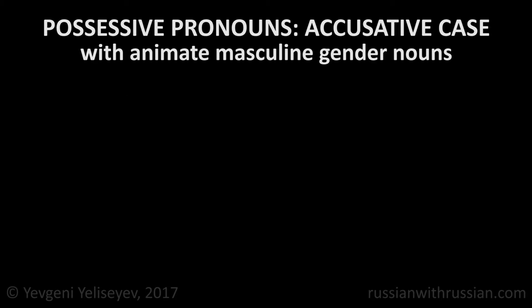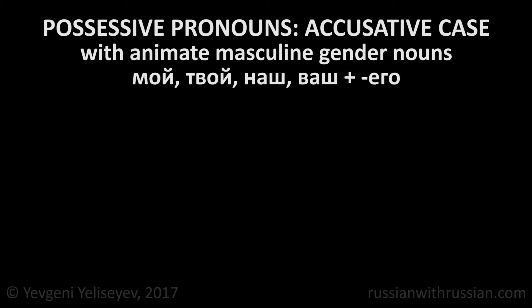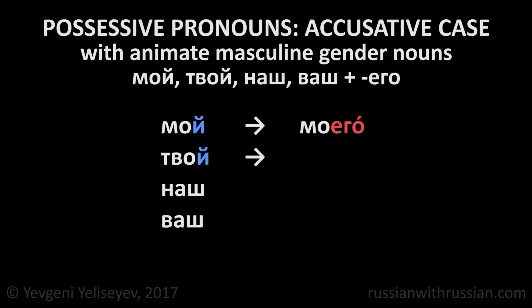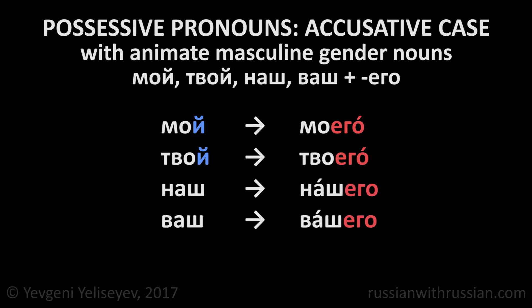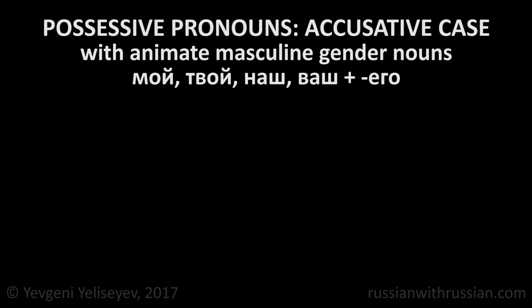When the pronouns мой, твой, наш, ваш are used with animate nouns describing people or animals, they add the ending -его in the accusative case. For example: мой → моего, твой → твоего, наш → нашего, ваш → вашего.